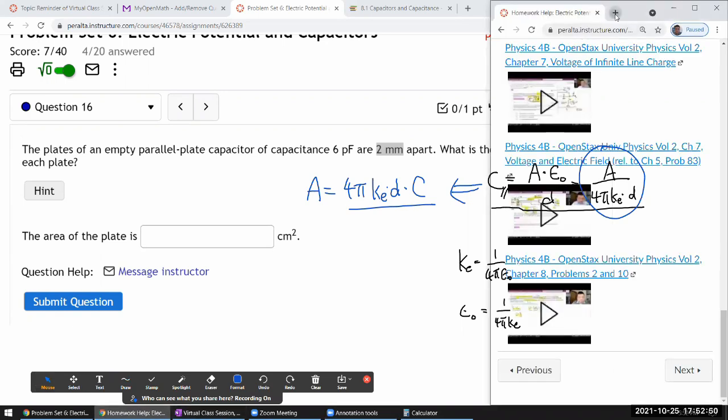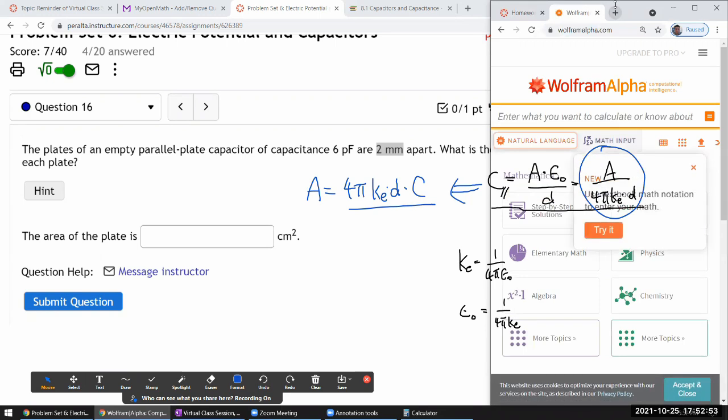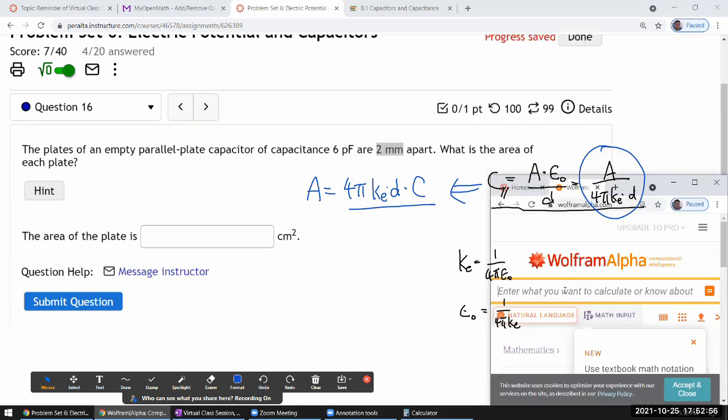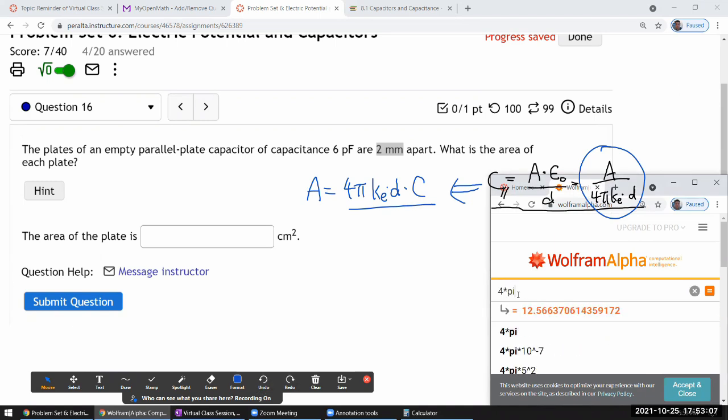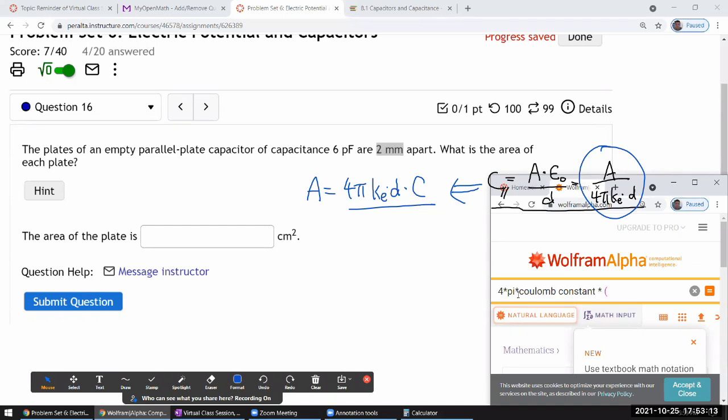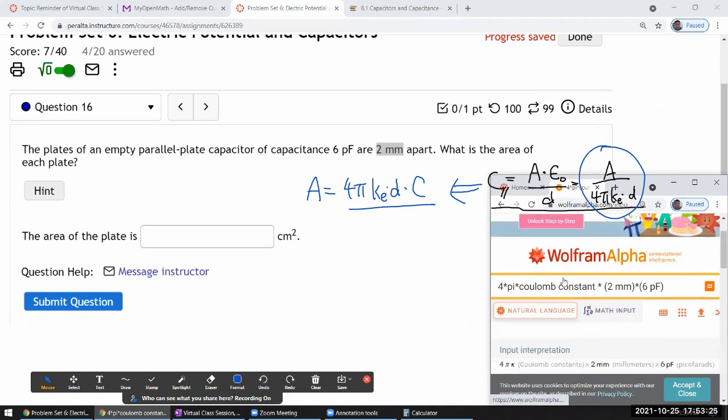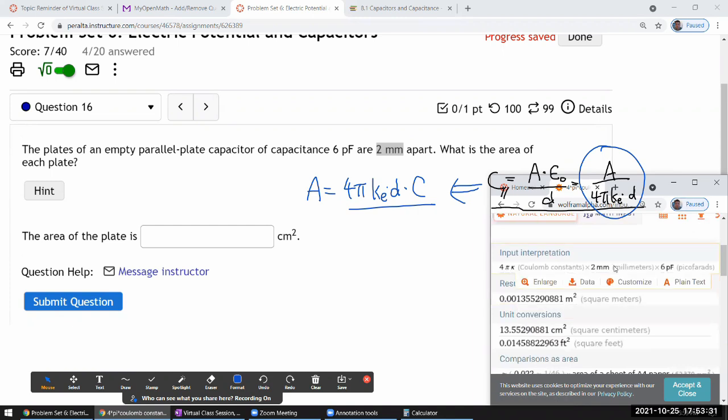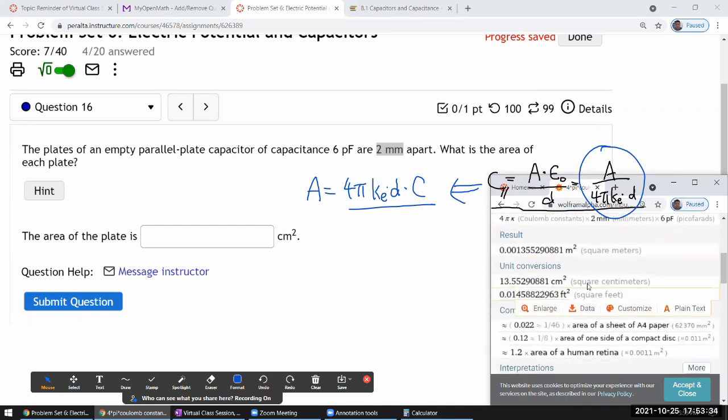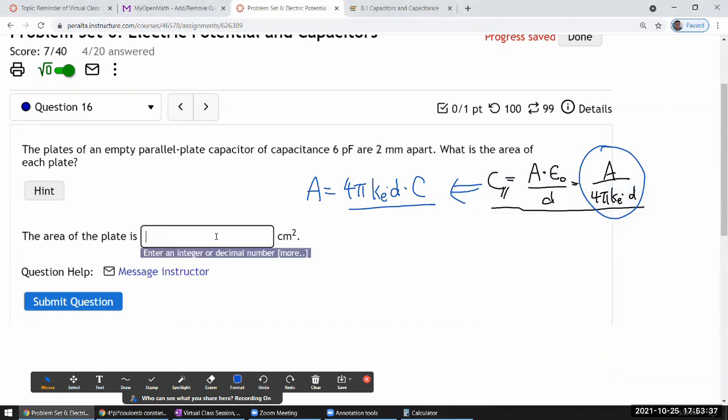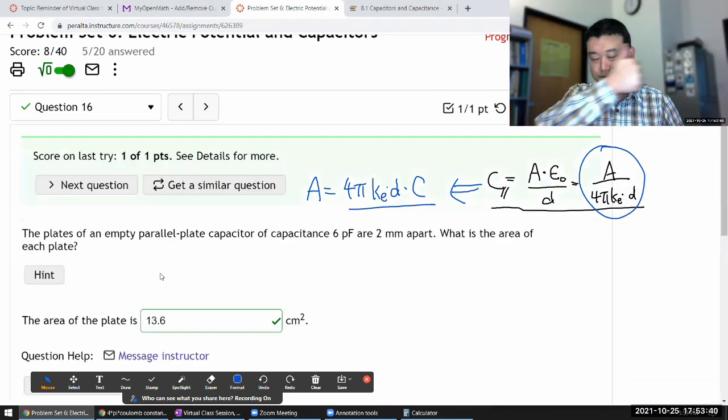I'm just going to use WolframAlpha to plug in numbers. Mainly so that I don't have to look up Coulomb constant. Such a hassle to look them up. Four pi times Coulomb constant times. And I'm going to let WolframAlpha do all the unit conversion. So two millimeter times capacitance, six picofarad. And it will give me the answer in a bunch of different units. And I hope one of them is in the unit of something like a centimeter squared. Square meter. That's one of the other. There it is. Centimeters. 13.6. So yeah, that's it.